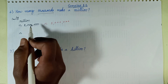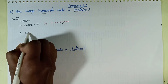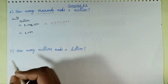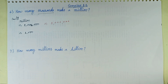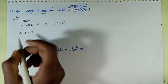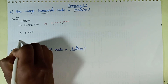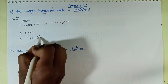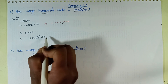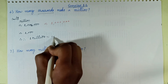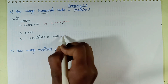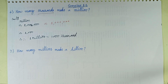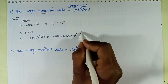One million has four digits from the thousands place — one, two, three, four. Therefore, one million equals one thousand thousands. That is my answer: 1,000 thousands make one million.